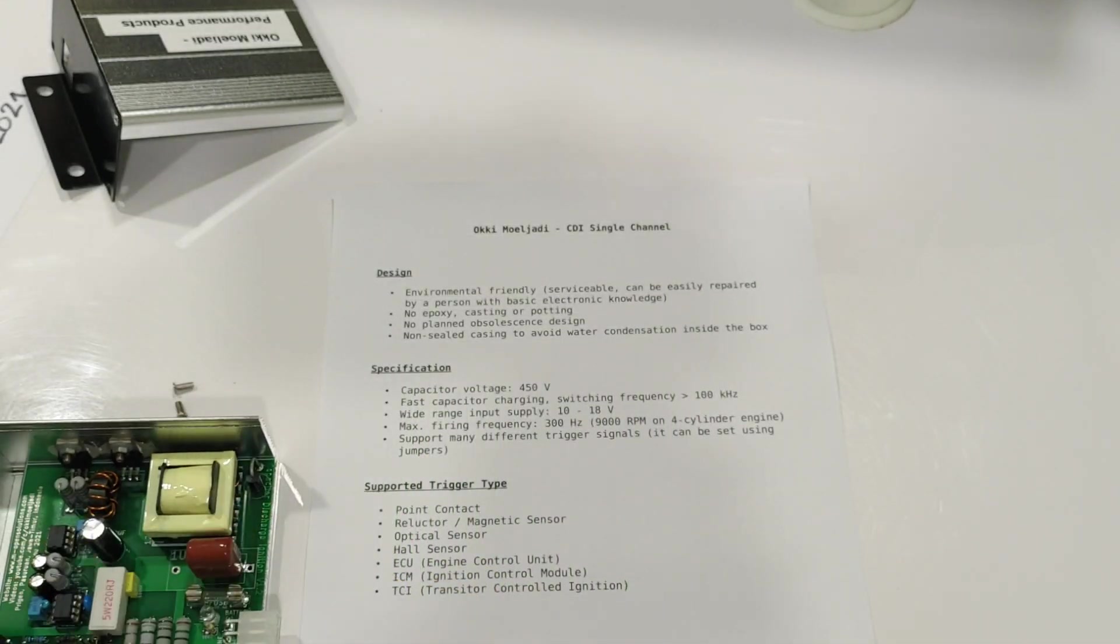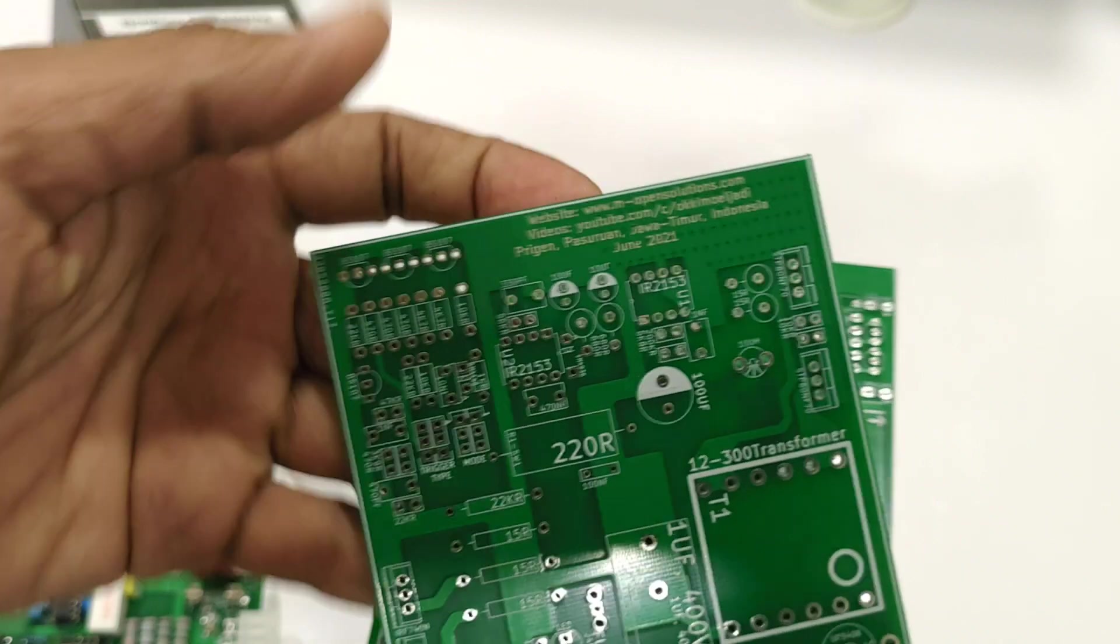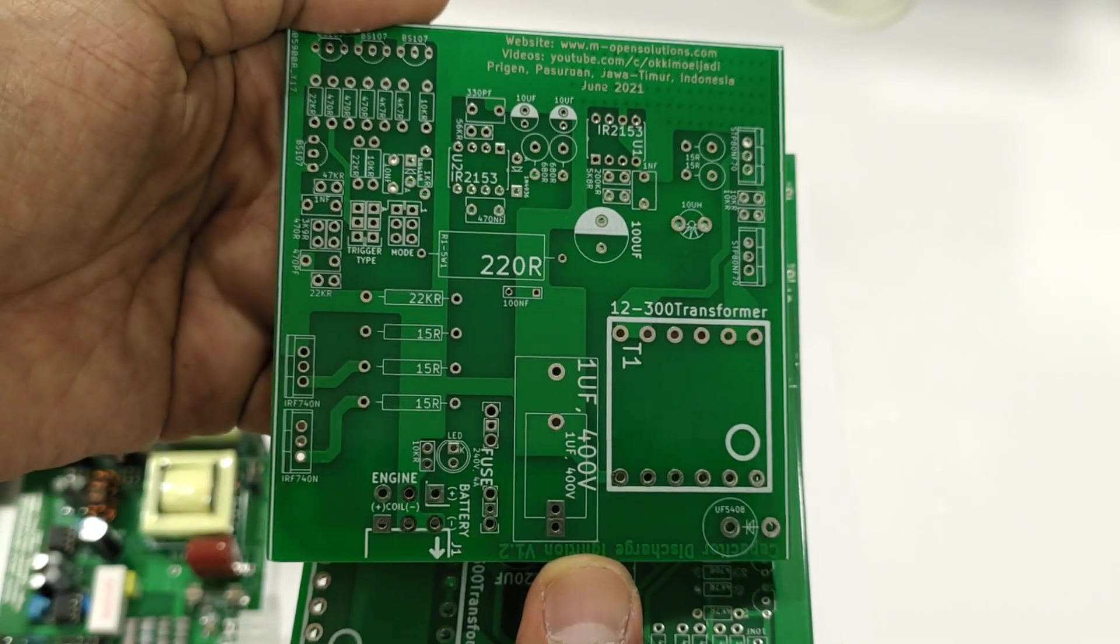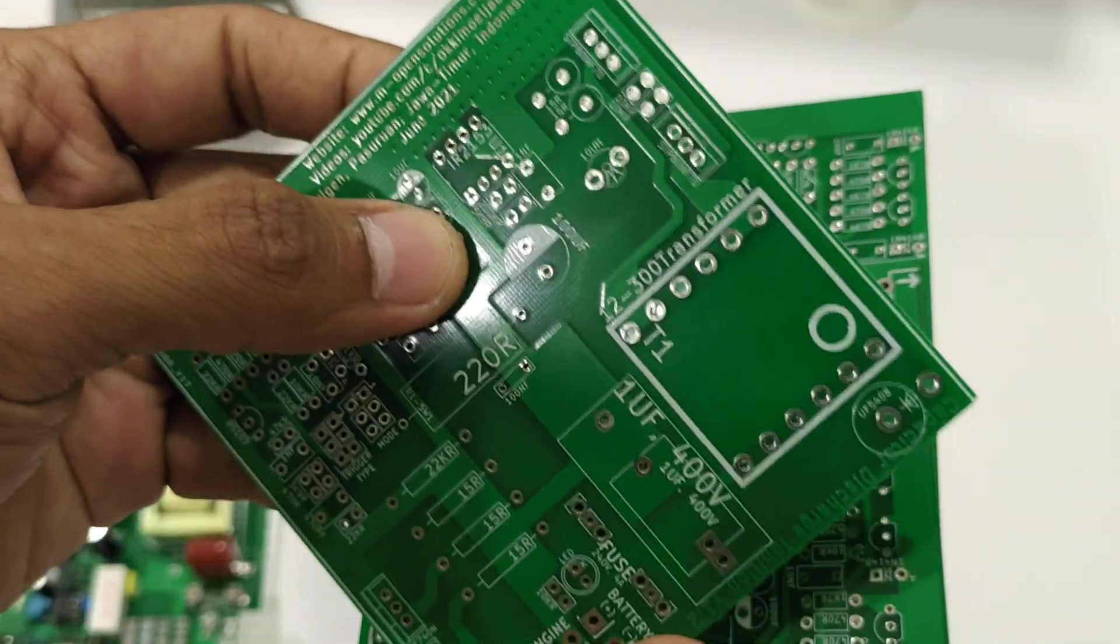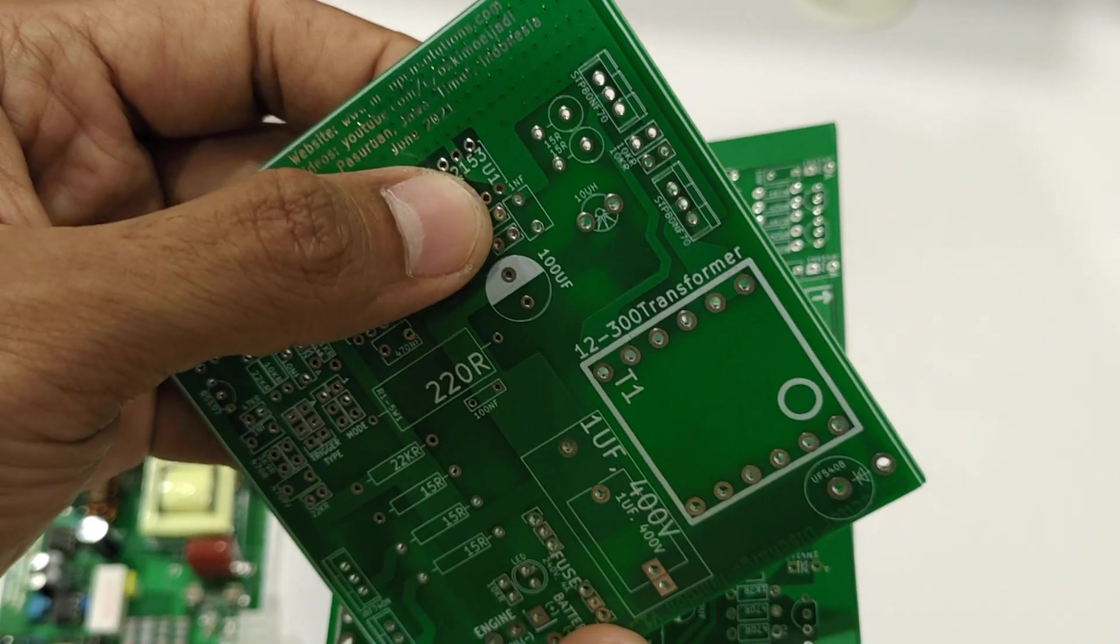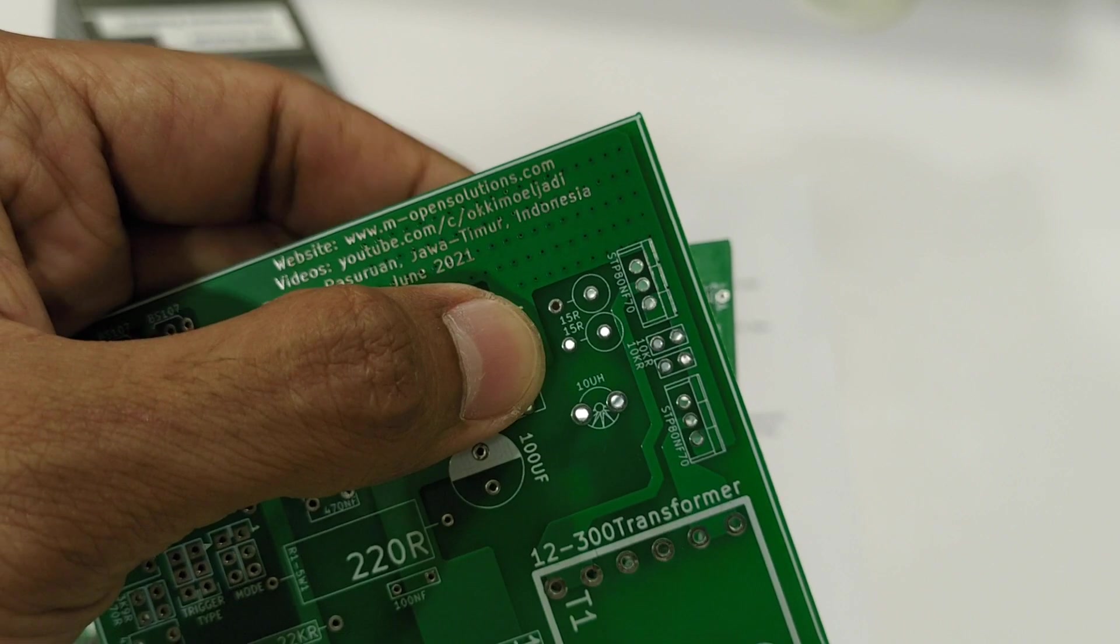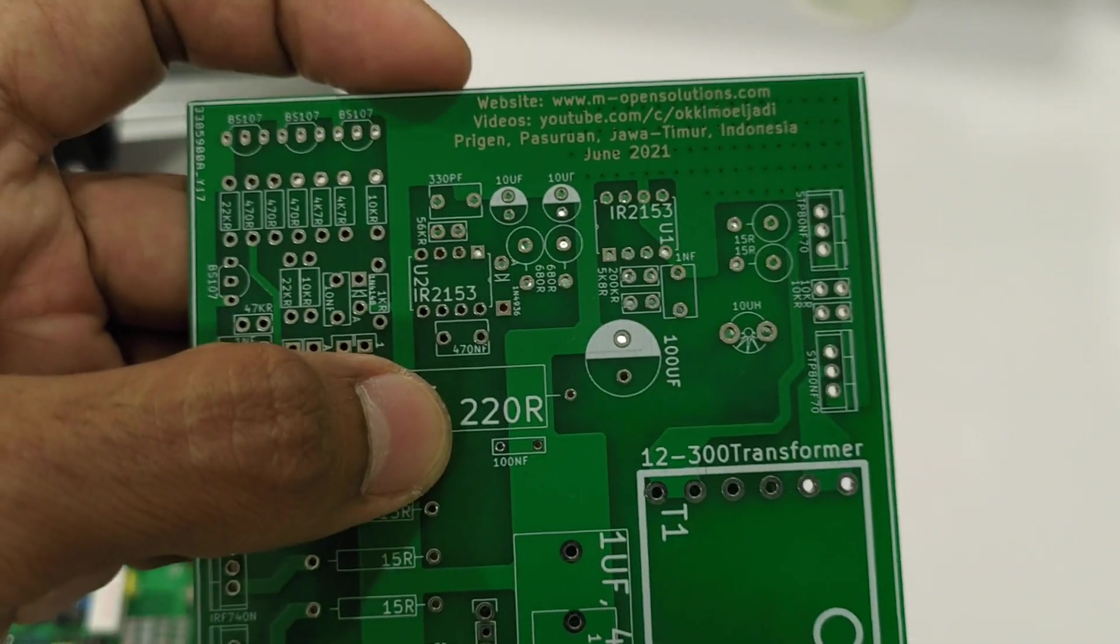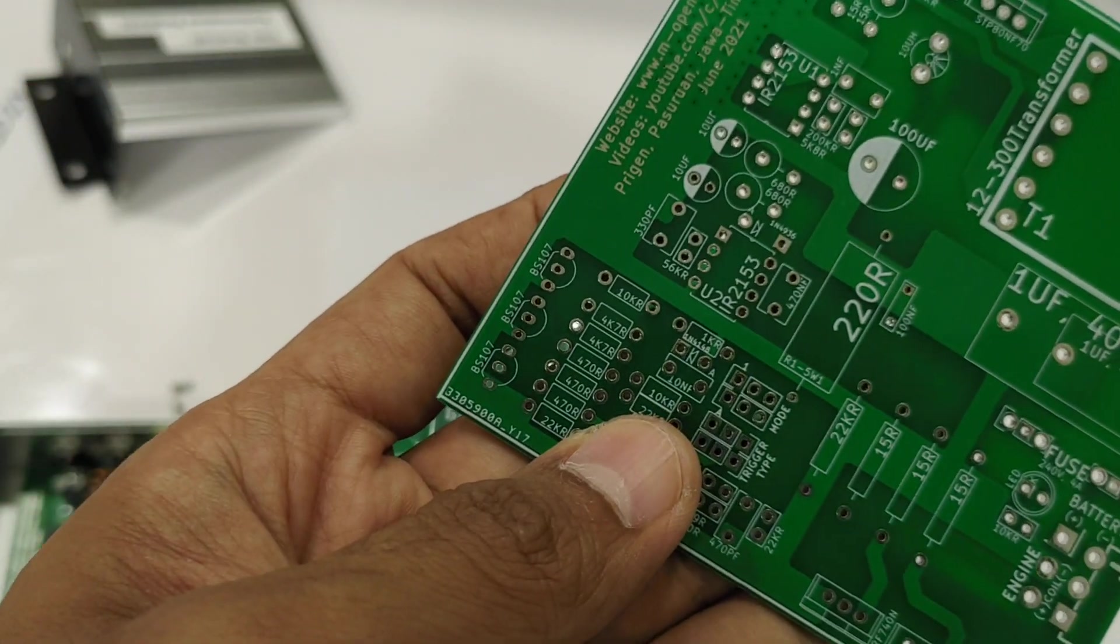I'm going to show you the other PCB. This is the single channel PCB. Here we can see all the part number and value.